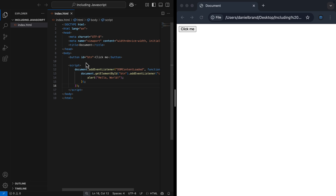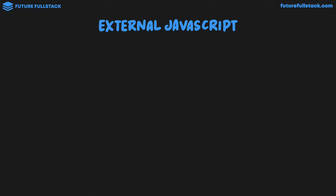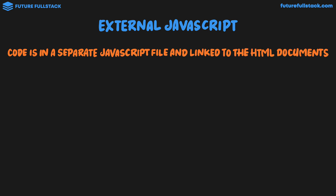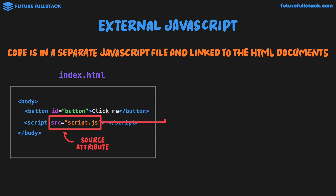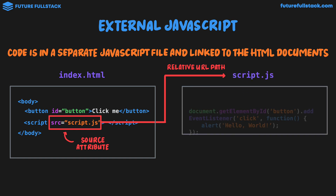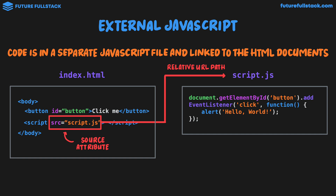The final method is external JavaScript. This is when code is in a separate JavaScript file and is linked to the HTML document. We have our index.html file with a button, and we add the same script tags as before, but this time inside the opening script tag we add a source attribute. The value of this source attribute — script.js — references a JavaScript file through a relative URL path. If you don't know anything about relative URL paths, you can check out my video in the description below.